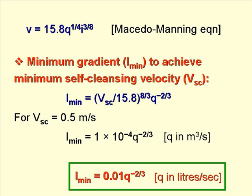We use the Macedo-Manning equation to obtain the minimum gradient, I min, to achieve the minimum self-cleansing velocity, Vsc. So I min equals (Vsc divided by 15.8) to the power 8/3, times Q to the power minus 2/3. Using the design value of 0.5 metres per second for Vsc, I min equals 1 times 10 to the minus 4 times Q to the minus 2/3, where Q is in cubic metres per second. If Q is in litres per second, then I min equals 0.01 times Q to the minus 2/3.